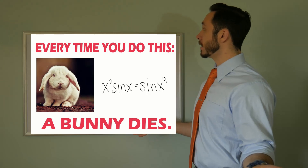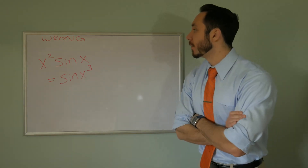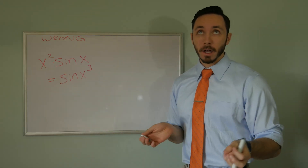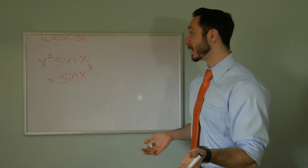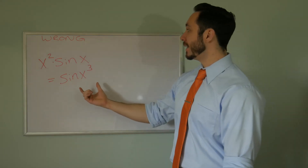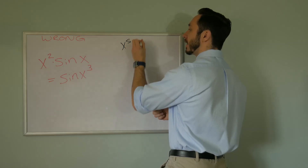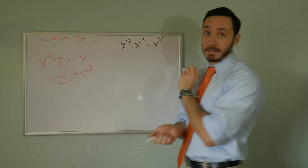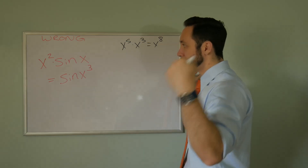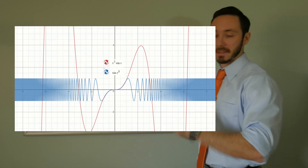Next one, every time you do this, a bunny dies. Here we have x squared times sine of x set equal to sine of x cubed — and just instinctively, no. We have a quadratic multiplied by a trig function, sine, and you can't just do that. Normally if you have x to the fifth times x to the third, you can add the exponents and get x to the eighth — but that's only when there's nothing else happening to it. Here we have a trig function on x, so you can't just merge the exponents. Compare the graphs of these two — they are very different graphs, so these are not the same things.